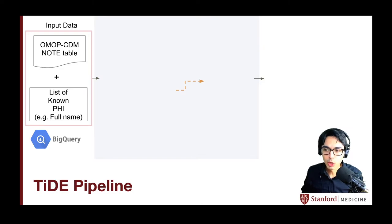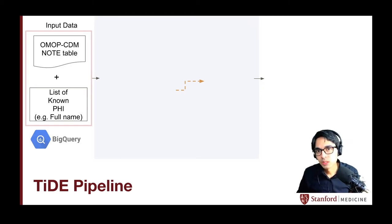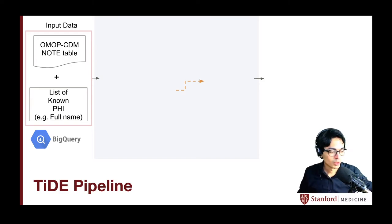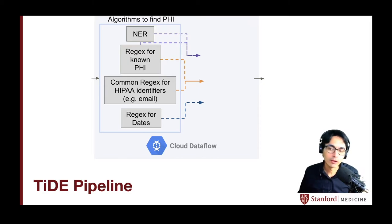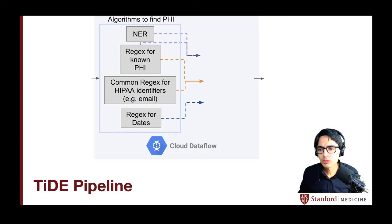First, we have the note table in the OMOP CDM. This note table to start is a fully identified note. Then we have a list of known PHI — the usual PHI that is collected at the time of admission: your address, your name, your social security number, all that information. We combine that known PHI with the clinical note, and what we try to do is first match the information we have and find it in the clinical note. That is the regex for known PHI. We also use regex to find common HIPAA identifiers that are easily findable using these patterns, like an email or a web address.